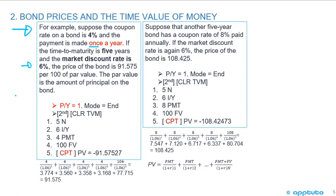The price of the bond is 91.575 per hundred dollars of par value. The par value is the amount of principal on the bond. Using algebra, the price is simply the present value of the cash flows. The coupon is 4% on 100, so that's 4. We have five coupon payments; remember the last payment is paid with the par value of 100.